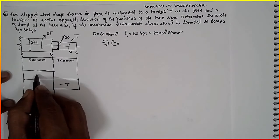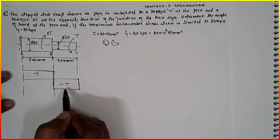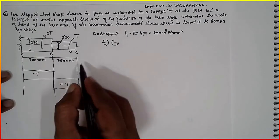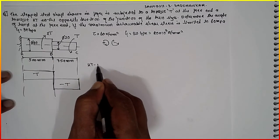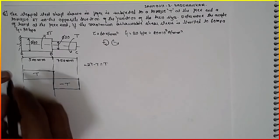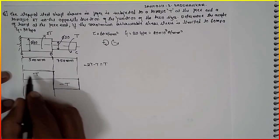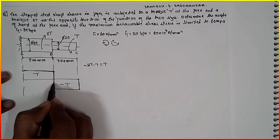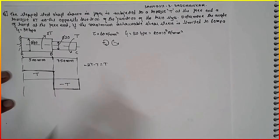Positive T minus T, 2T in this way. 2T minus T is nothing but T. It is written here. That means the torque obtained is same for both the cases, both the cases.